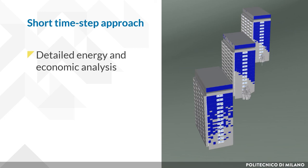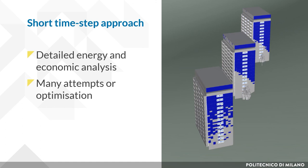The short time-step method supports design decisions by providing detailed information about the expected system performance. For large systems, manual iteration is not viable, so at Hubérac Research we automated this process using an optimization algorithm to achieve a design target. The software includes different tools: an irradiance simulator, an optimization algorithm, and a module for simulation of the PV and battery system. Over the years, we have expanded the software's capabilities, including optimization targets such as maximum economic outcome, minimum levelized cost of electricity, beam features, and a calculator of the building's thermal demand.